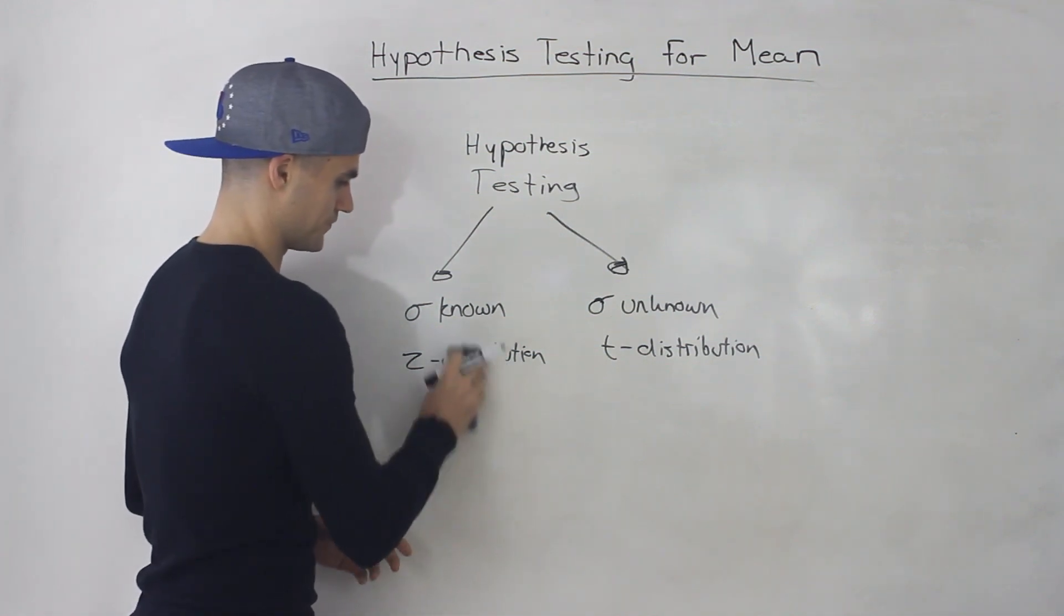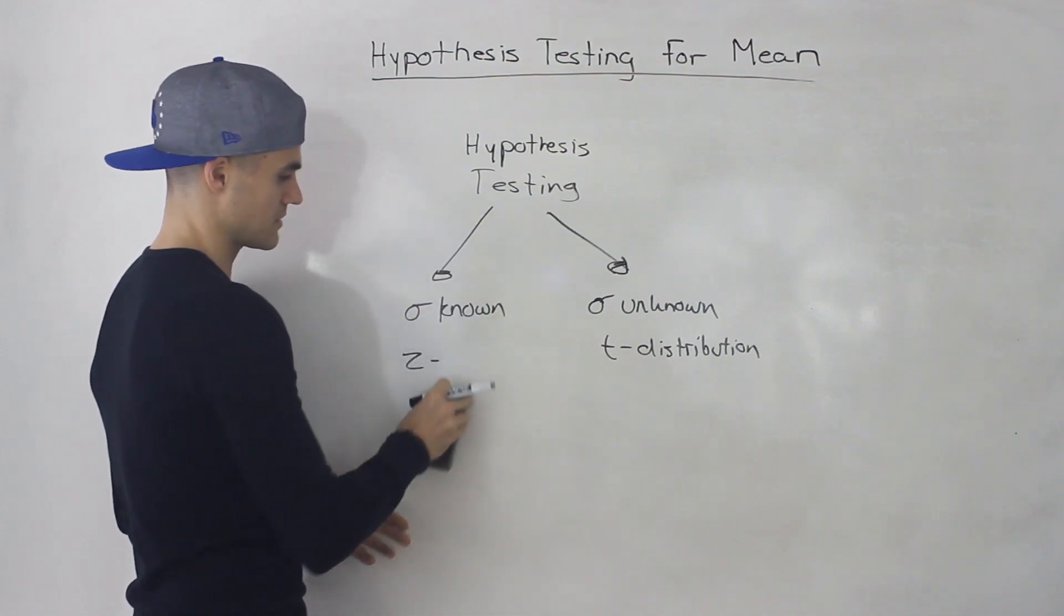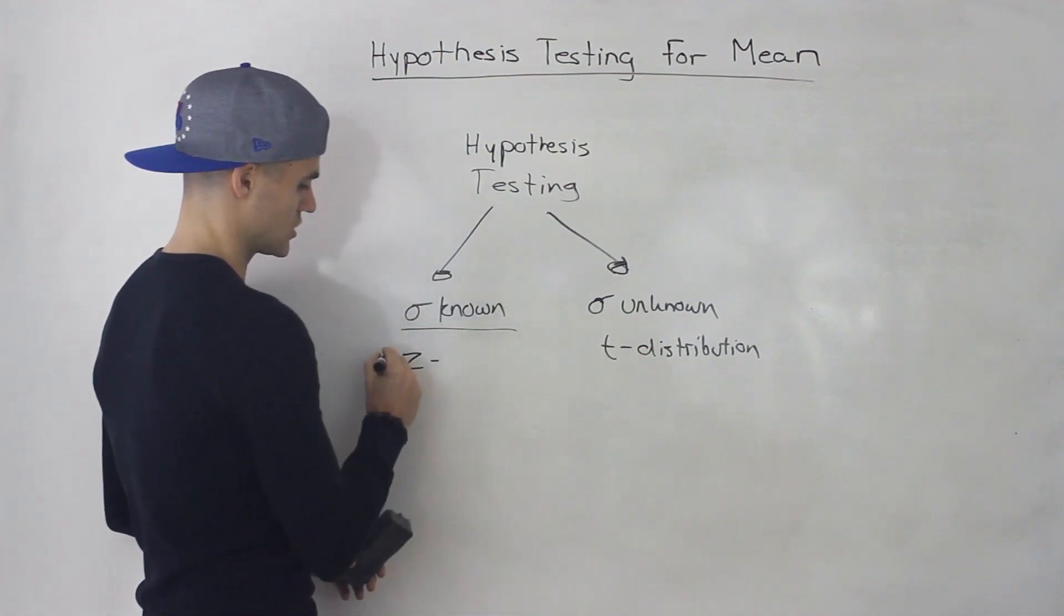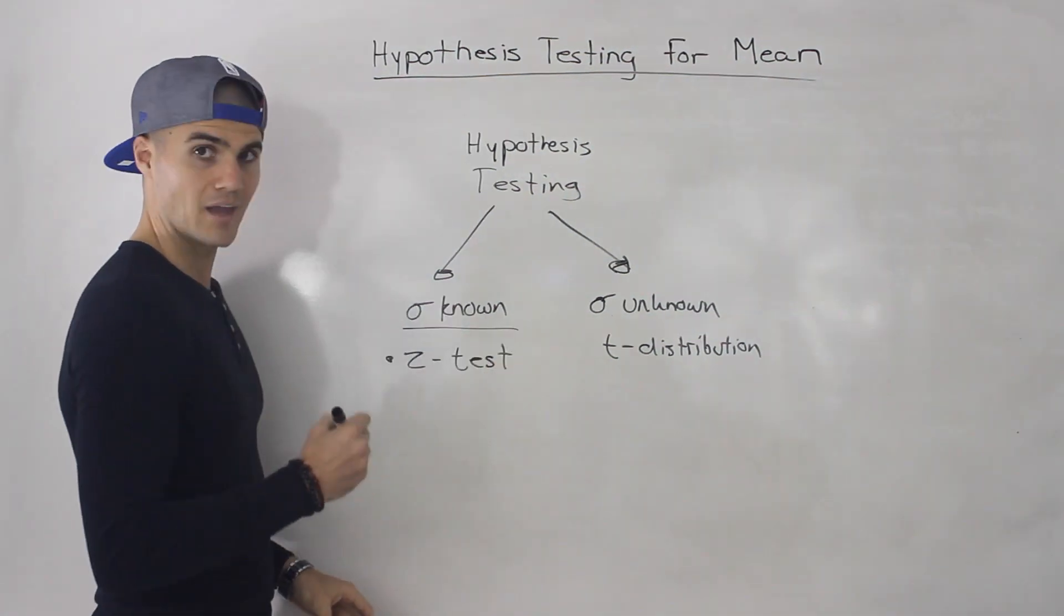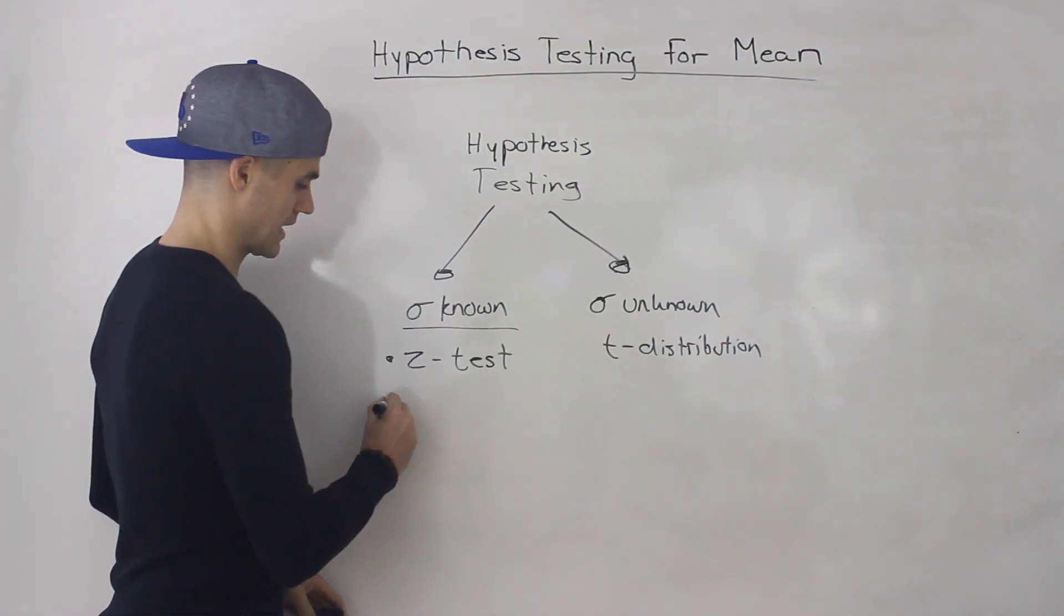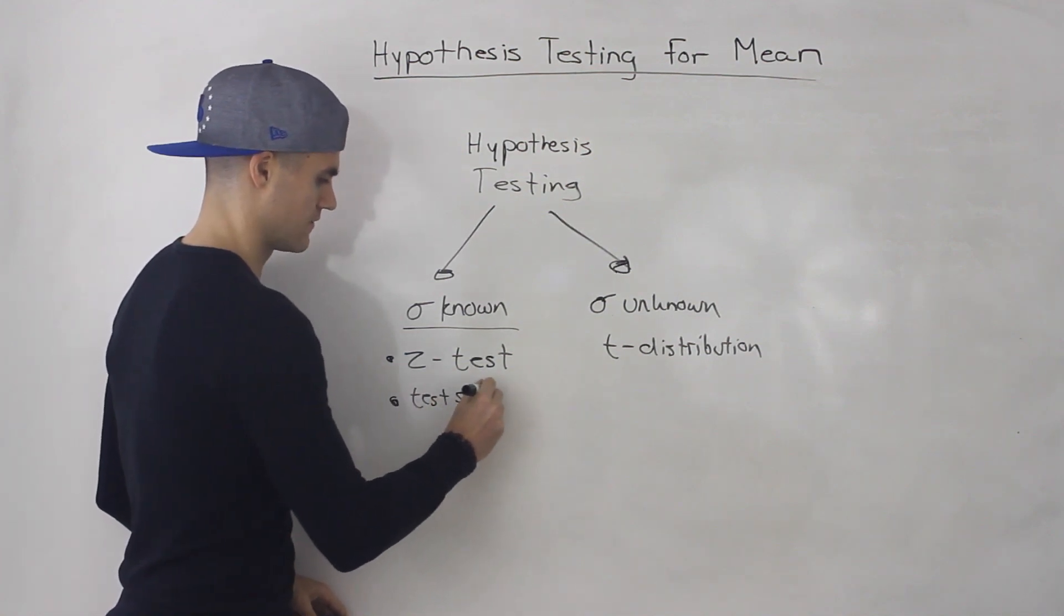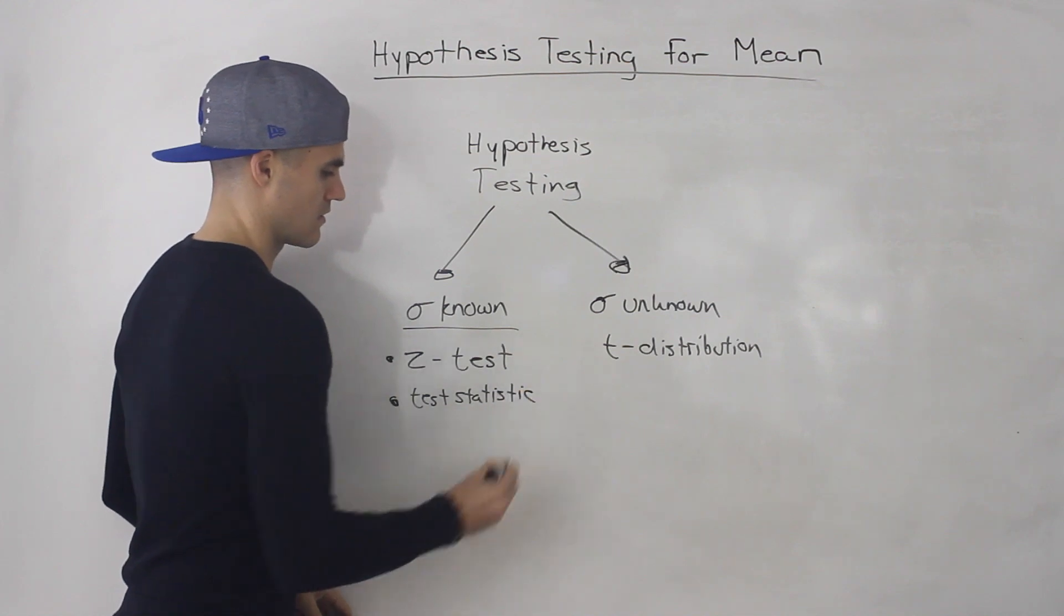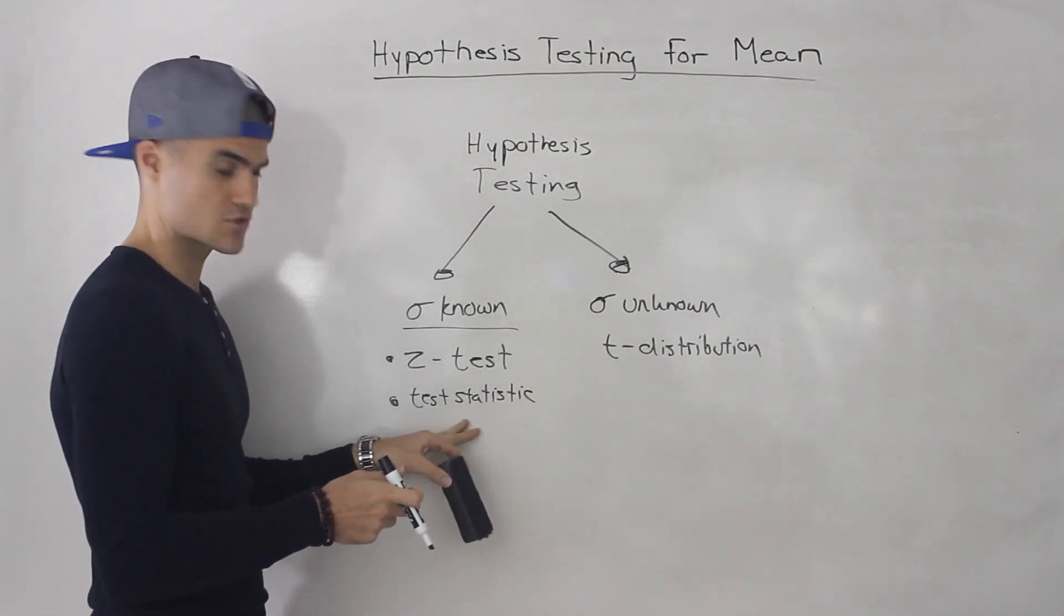And so to get a little bit more specific related to hypothesis testing, basically, when the standard deviation is known, we're going to be doing a Z test. And what that basically means is that the test statistic that you calculate, mentioned in previous videos, generally what a test statistic is, but we're going to calculate it in the next couple of videos, I'm going to show you how to do it.